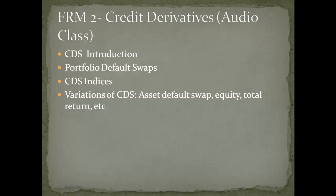The credit default swap contract must specify the underlying references in advance so that both parties agree when a credit event has occurred. The CDS will typically specify the reference name, which is the specified issuer or obligor of the underlying asset. The term of the contract may be narrowed to a specific asset or issue as agreed upon by both parties. The key difference between CDS and traditional insurance is that in a standard insurance contract the insured must own the underlying asset, whereas the protection buyer in a CDS may or may not own the asset.